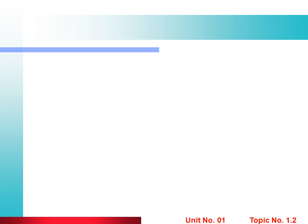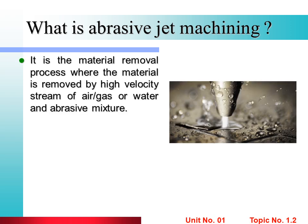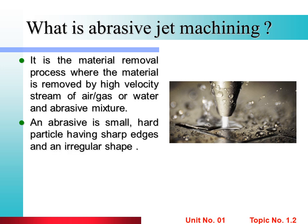What is abrasive jet machining? It is a material removal process where material is removed by a high-velocity stream of air, gas, or water and abrasive mixture. Abrasive jet machining is a process in which abrasive particles are used along with air or gas to remove material from the workpiece. Machining means unwanted material is removed from the surface to give it the required shape and size. An abrasive is a small, hard particle having sharp edges and an irregular shape.